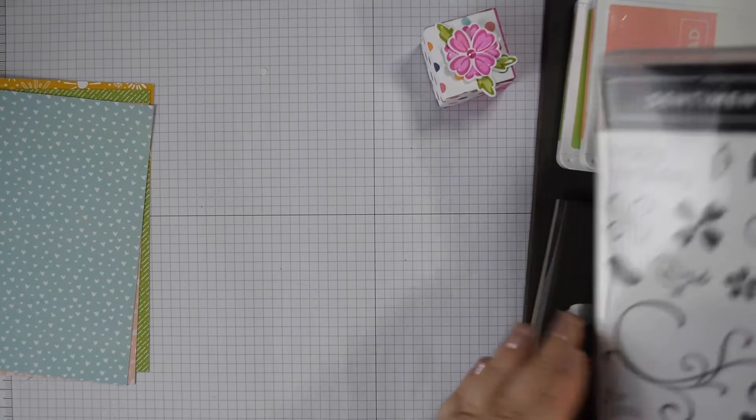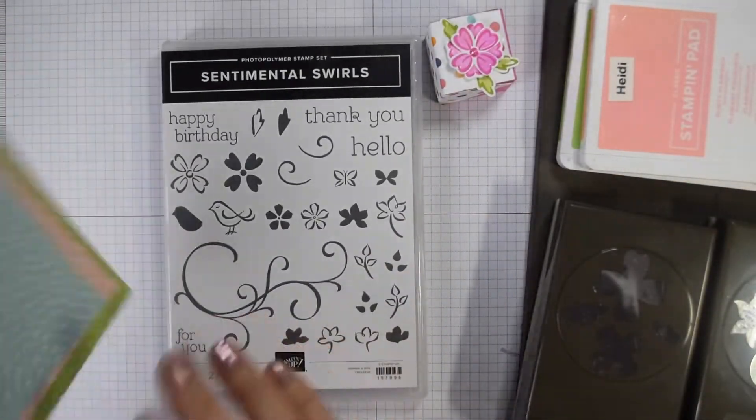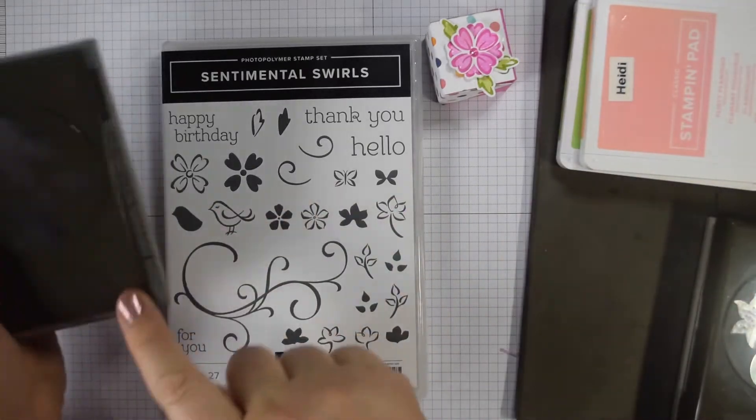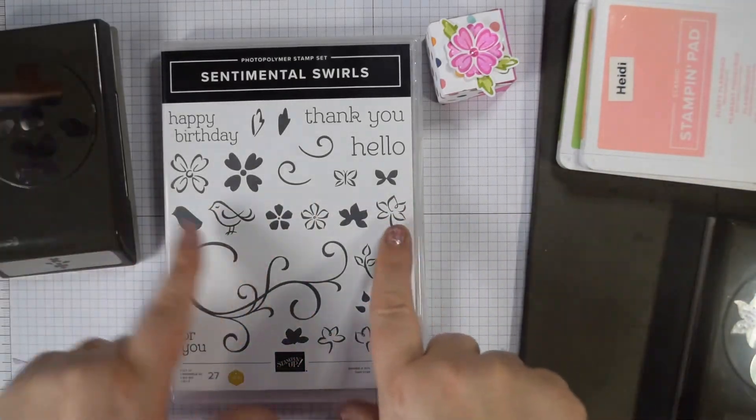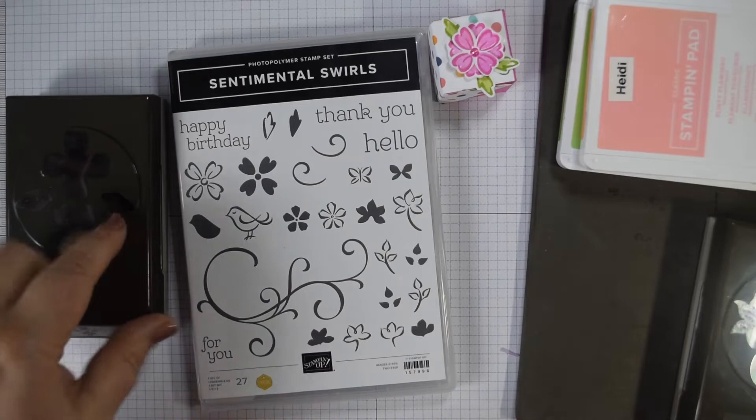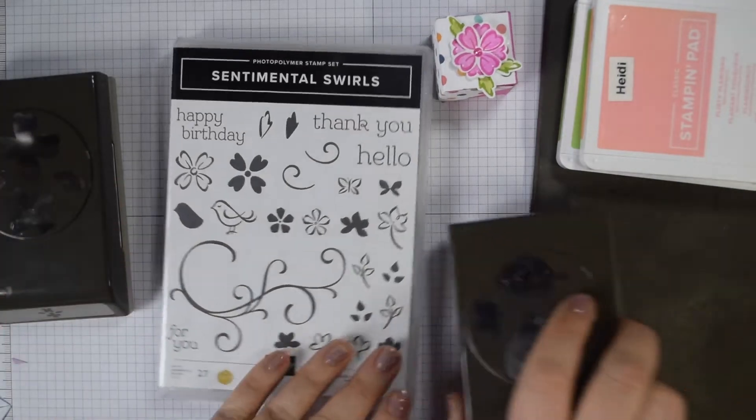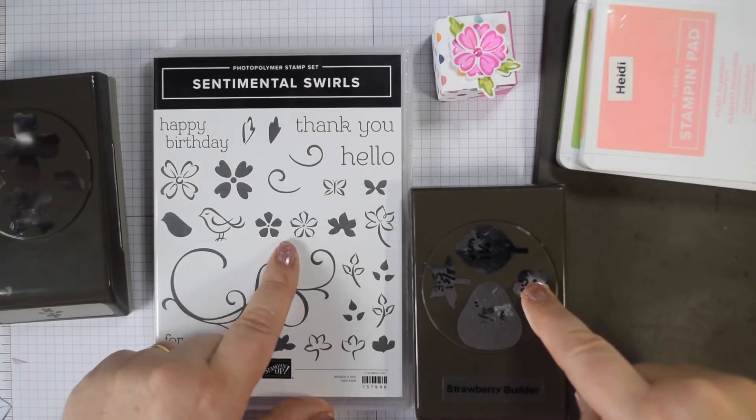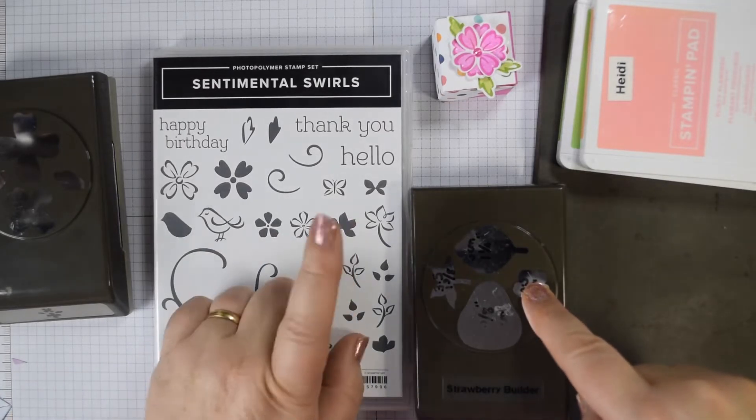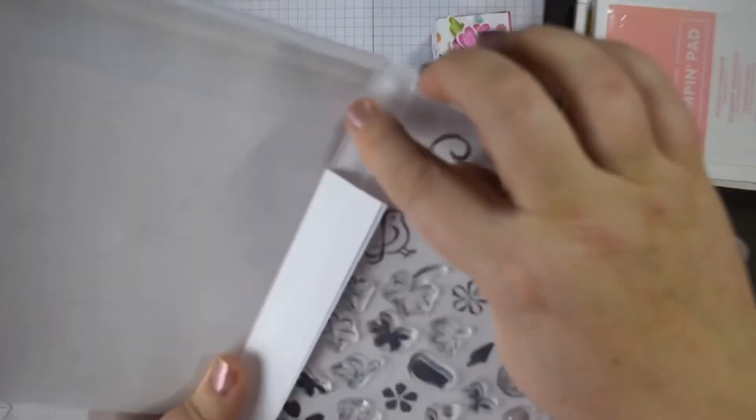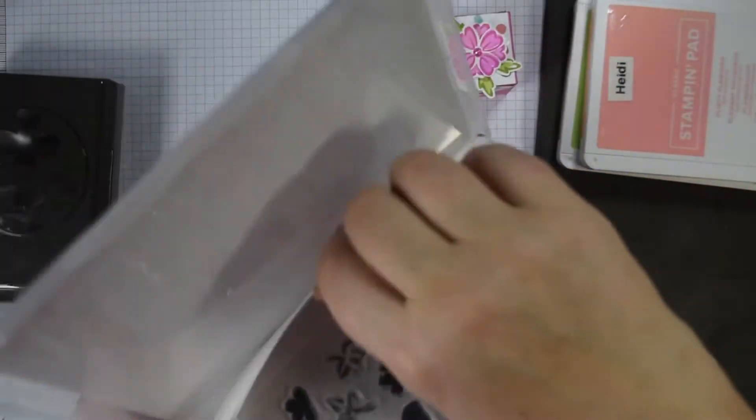The great thing about this stamp set is that it coordinates with a couple of punches that we already have in the catalogue. It's Flowers and Leaves, which is this one here. This flower coordinates with the smaller flower on here. This little leaf coordinates with the leaf on here. The other flower coordinates with our Strawberry Builder Punch, you can see in here.